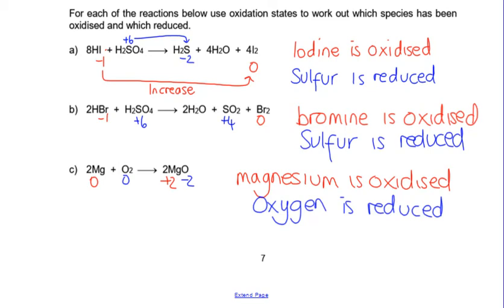So here in the second example, the Br minus 1 to 0, that's a change of 1. The sulfur is changing by 2, so we needed 2 Brs for every sulfur.